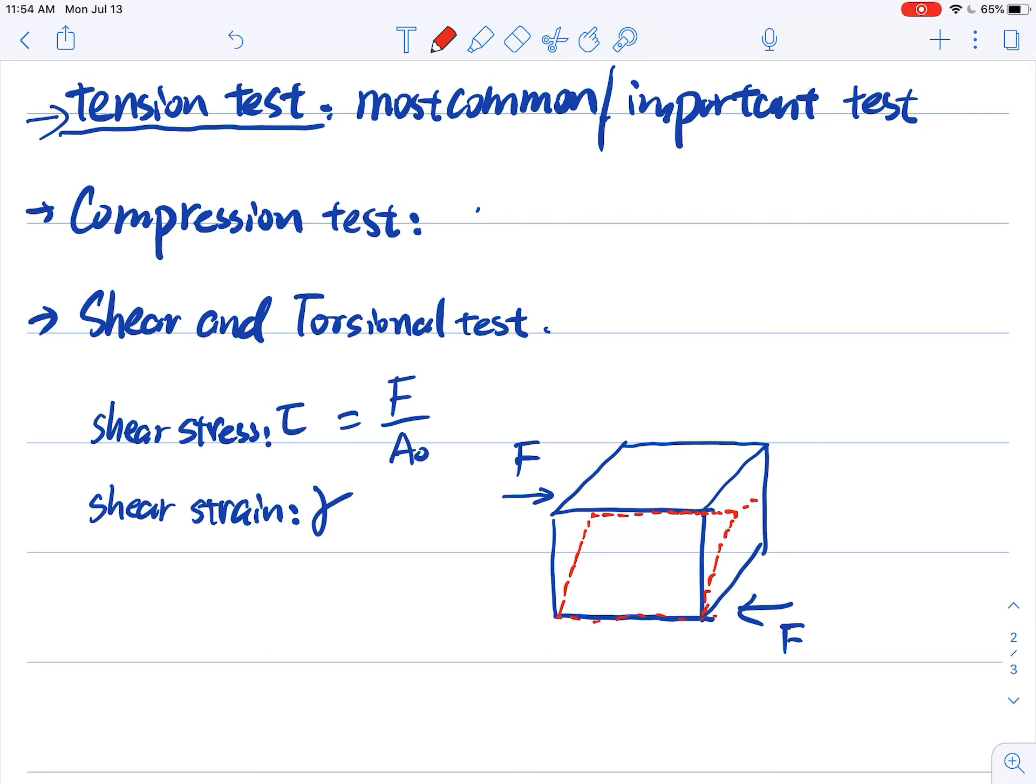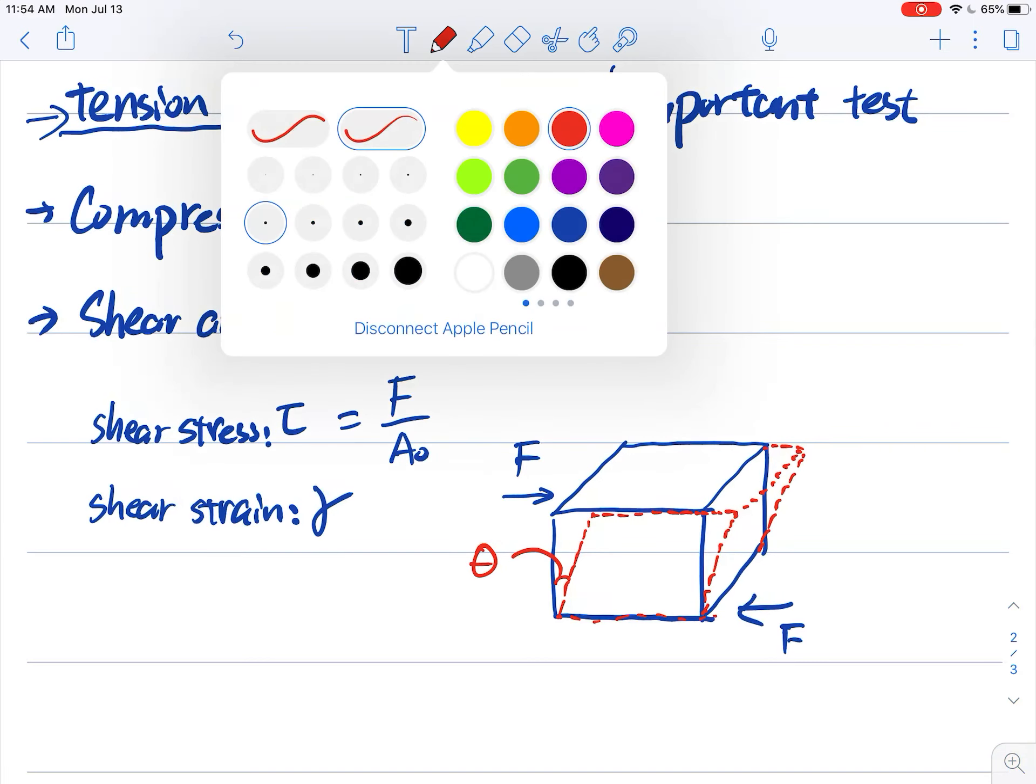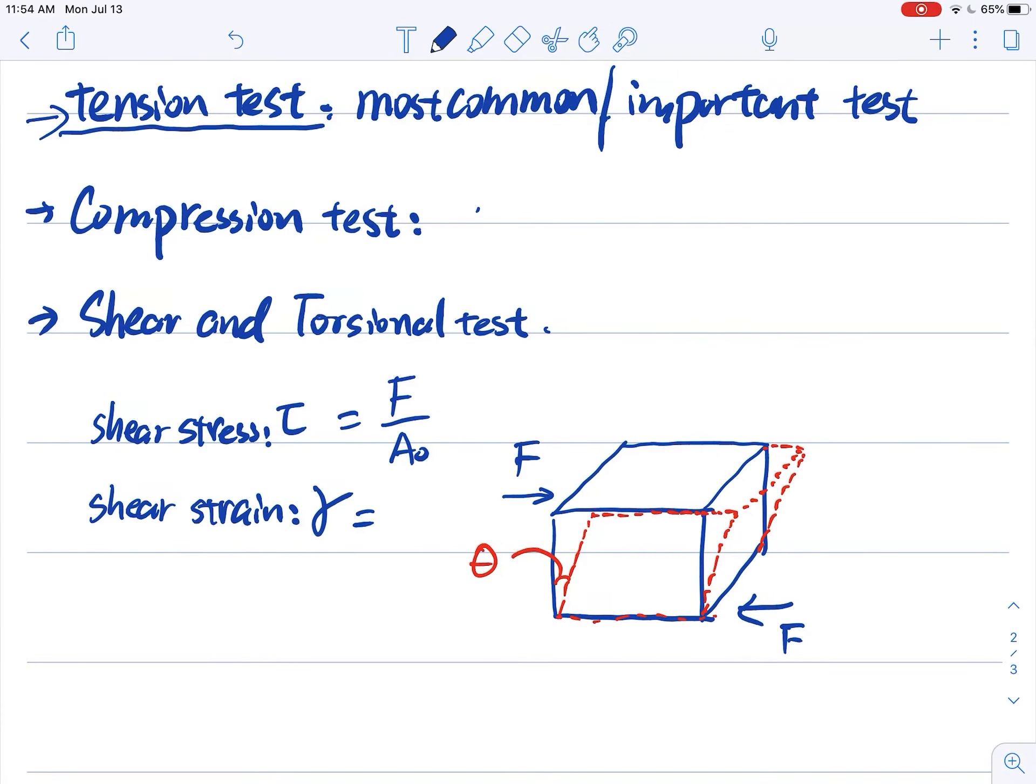So after you apply this load to this material, now the material deforms to its new shape. And the angle here between this blue line and right line here is called θ. And that θ could tell us important information about shear strain. And shear strain can be calculated as γ equals tan θ.